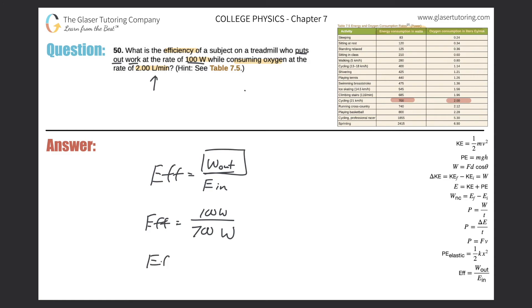And now we can simply calculate the efficiency. So it's 100 over 700. And that works out to be about, in terms of a percentage, it would be about 14.3%, or in terms of decimal, 0.143. And that would be the efficiency.